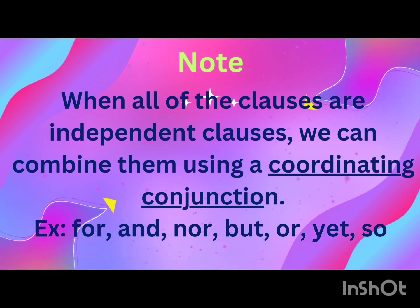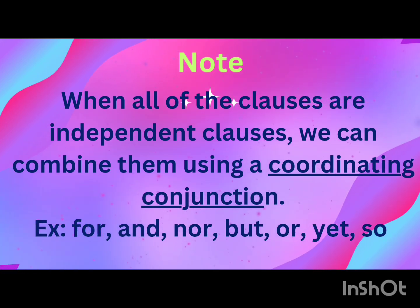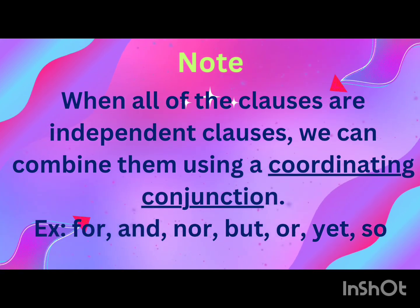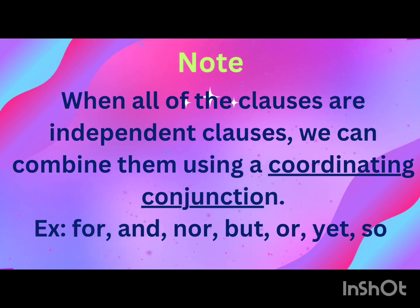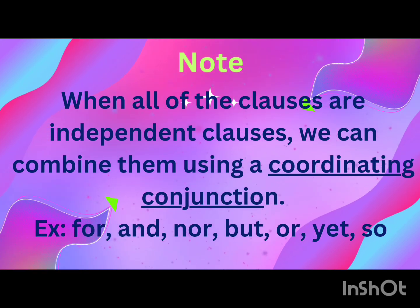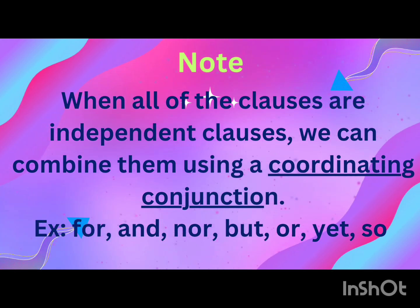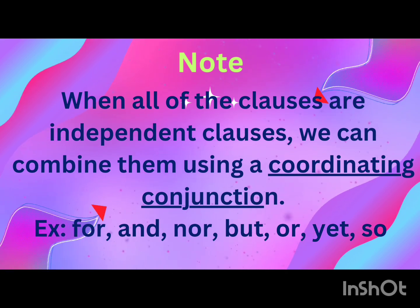When all of the clauses are independent clauses, we can combine them using coordinating conjunctions like: for, and, nor, but, or, yet, so.